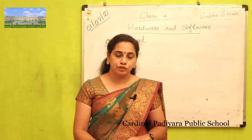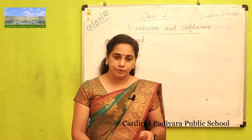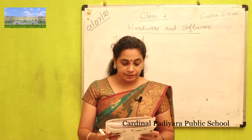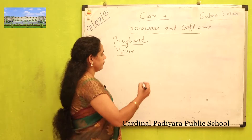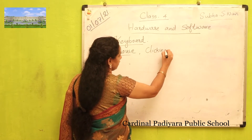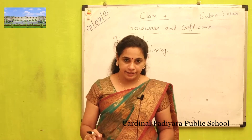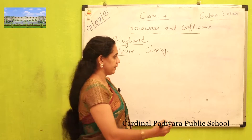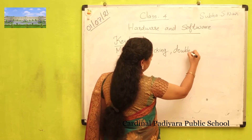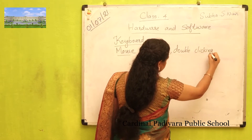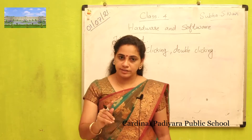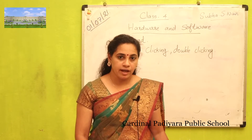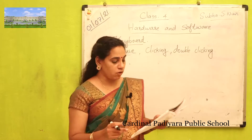Mouse is also an input device. It is used to point at objects on the computer screen. A mouse has two or three buttons. Pressing the mouse button once is called clicking — normally a left click. Pressing the mouse button twice without a gap is called double clicking.